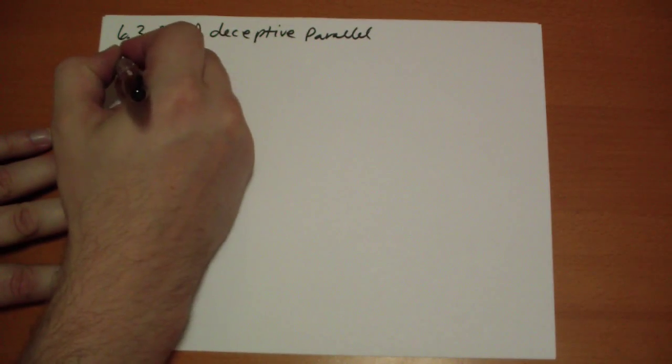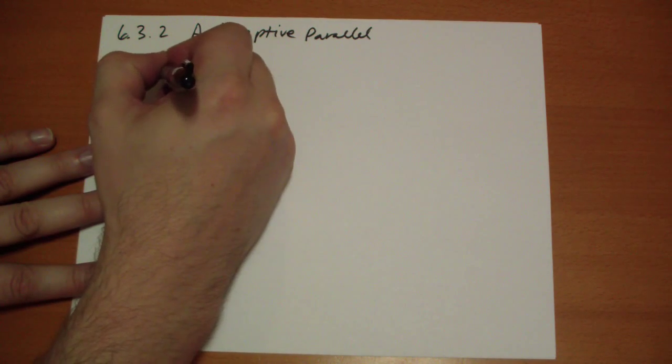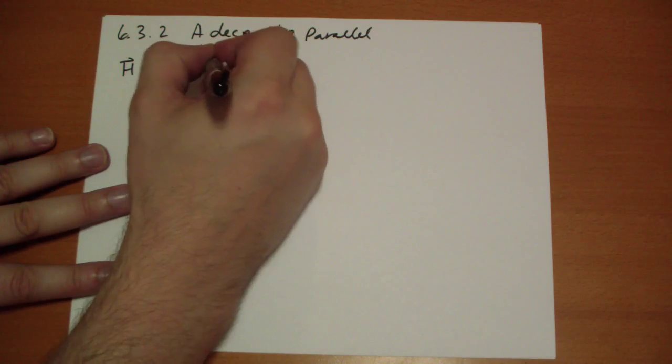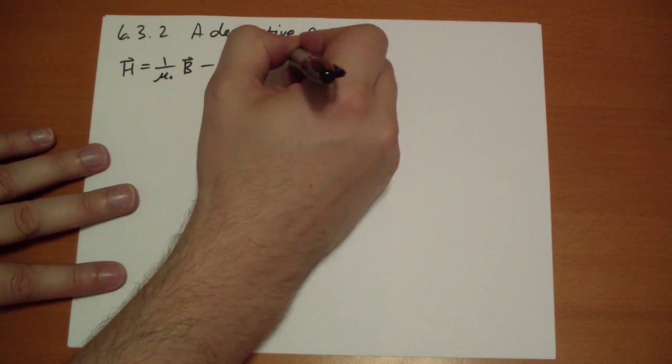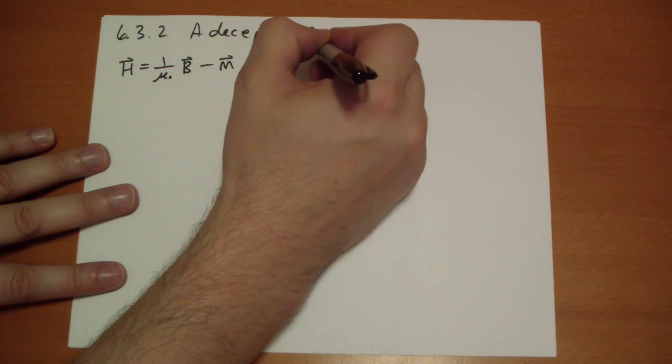So really quickly, let's review. H vector is 1 over mu naught, the B vector, minus the M vector. And the curl of H will give us our free current, or vice versa.